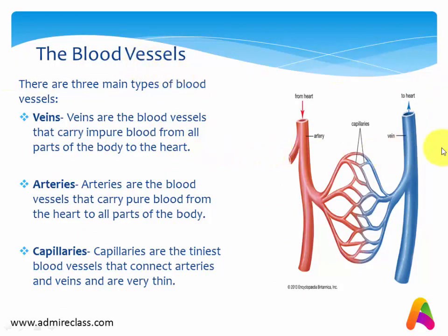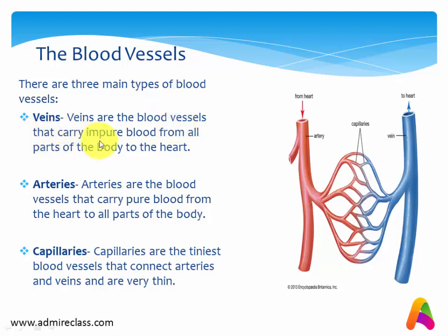Now we move to the blood vessels. You can see the picture of the blood vessel. There are three main types of blood vessels. The first one is veins. Veins are the blood vessels that carry impure blood from all parts of the body to the heart. So the main function of a vein is to carry all the impure blood present inside the body back to the heart.